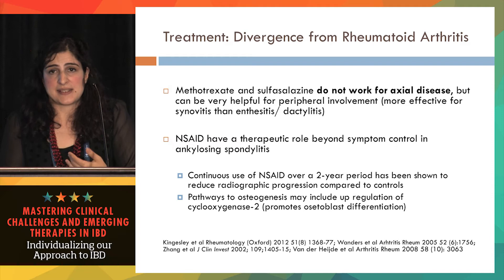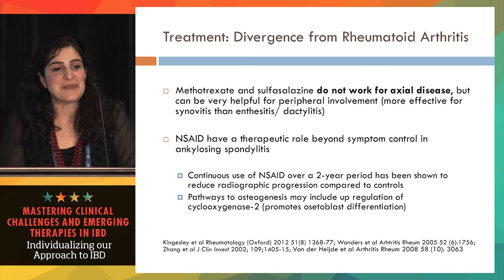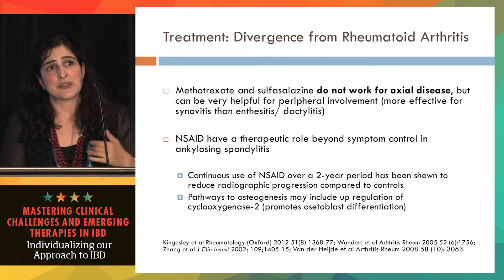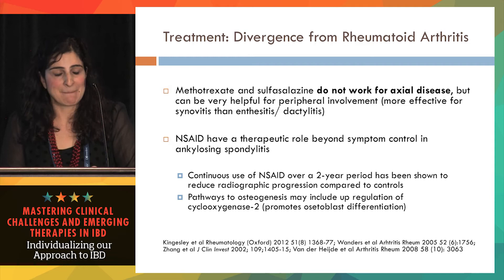For axial disease, our first-line therapy is NSAIDs. We like NSAIDs, and you probably despise them. They have a therapeutic role obviously in symptom control, but studies have shown in ankylosing spondylitis that continuous NSAID use actually helps prevent deformities — probably because COX-2 has some effects on osteoblast differentiation, helping prevent the new bone formation that's so critical to deformity development.